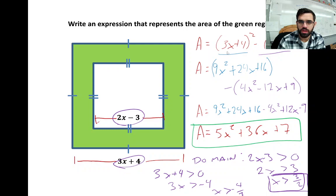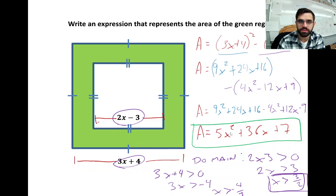If the area of a square is side length squared, we get the big square squared, minus the little square's area. This is a polynomial function we can simplify. We can square each piece using the box method — the big area squared and the little square's area. We end up with this expression in standard form: the area is 5x² + 36x + 7. Pause the video and make sure all the steps make sense.